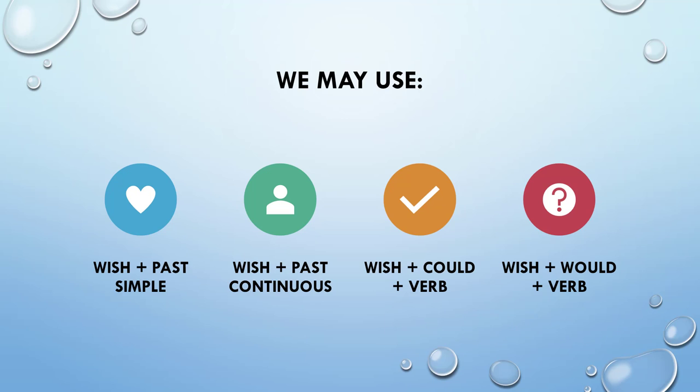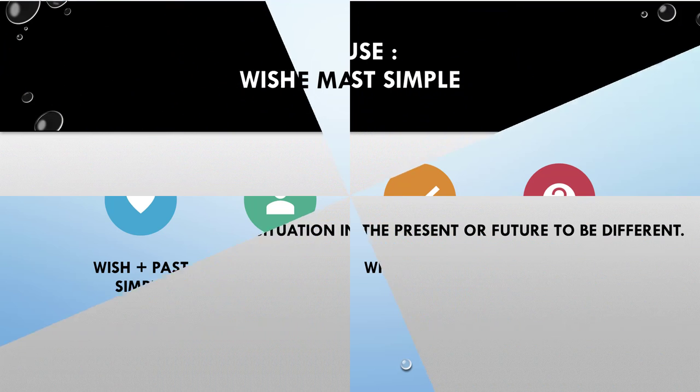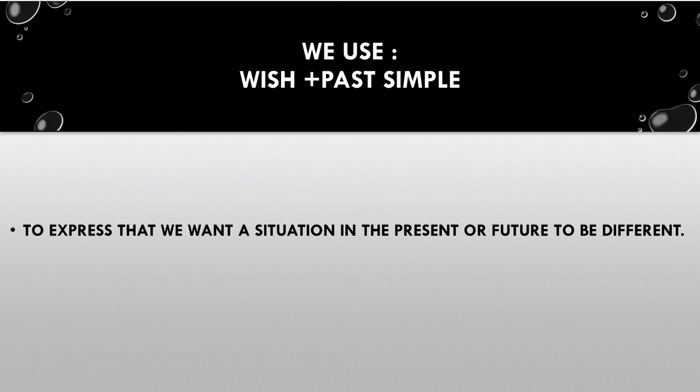In English, there are different ways to express wishes in the present and in the future. We may use wish plus past simple, wish plus past continuous, wish plus could plus verb, or wish plus would plus verb. We use wish plus past simple to express that we want a situation in the present or future to be different.